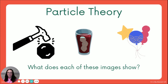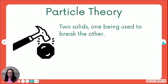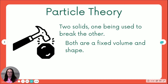You've got a hammer hitting an object, a glass of drink with some ice in, and three balloons. First picture: you've got two solids. One is being used to break the other. Both are a fixed volume and a fixed shape — you can see that on the hammer and on the object being hit.